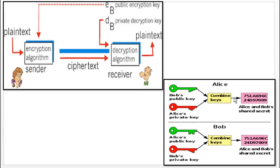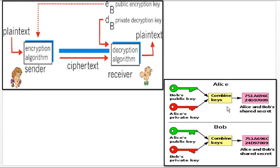An example is given using Alice and Bob's conversation with asymmetric encipherment. In this example, Alice is sending data to Bob. During encryption, Alice uses Bob's public key and Alice's private key to encrypt the data and produce the ciphertext. At the receiving end, Bob uses his private key and Alice's public key to decrypt the ciphertext.